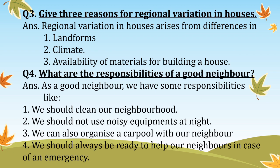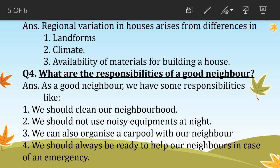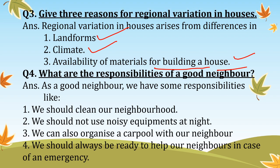Give three reasons for regional variation in houses, as discussed in chapter 3. First, landforms. Second, climate. Third, availability of materials for building a house. These are the three reasons for regional variation.